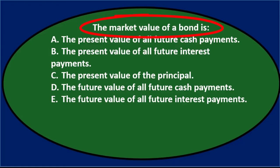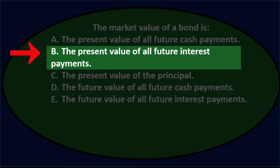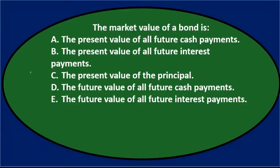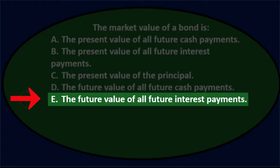First question: the market value of a bond is — A) the present value of all future cash payments, B) the present value of all future interest payments, C) the present value of the principal, D) the future value of all cash payments, or E) the future value of all future interest payments.